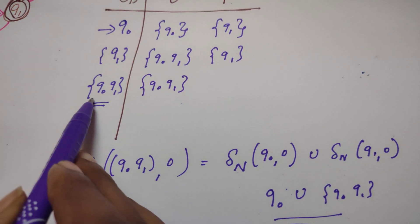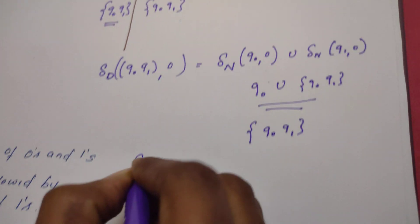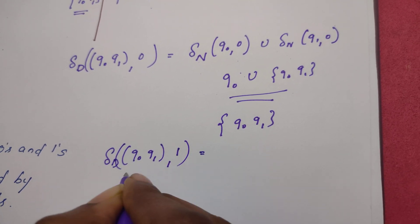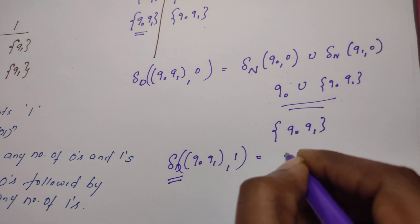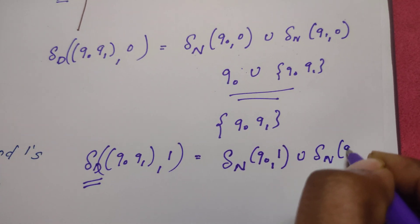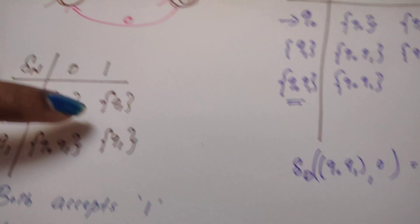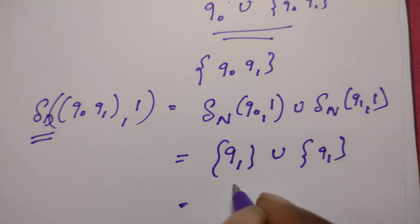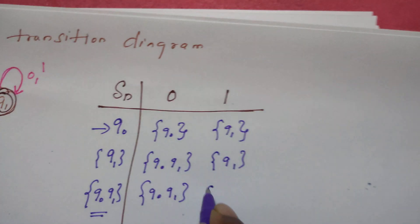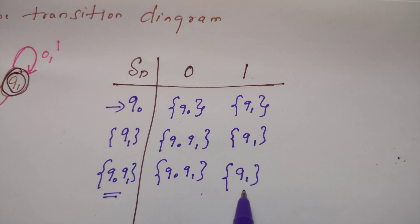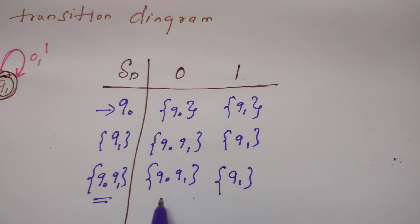Similarly, let us identify from {Q0, Q1} on reading 1. Del N of {Q0, Q1} on reading 1 — we refer to the NFSM transition table: del N of Q0 on 1 union del N of Q1 on 1. Q0 on 1 gives Q1, and Q1 on 1 gives Q1. Finding the union of these two gives Q1 itself — there is no difference. So from {Q0, Q1} on reading 1, it reaches Q1. From here we are not finding any new states, so we have built the complete transition table of DFSM.